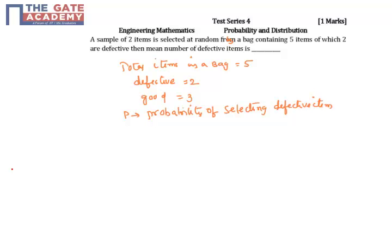If I take P as the probability of selecting a defective item, the mean is nothing but N into P.